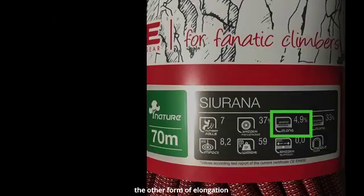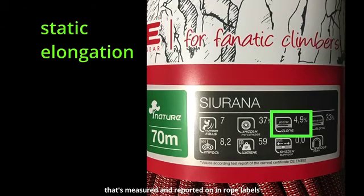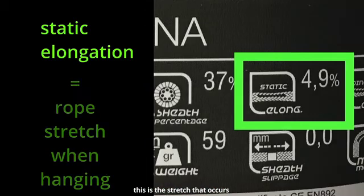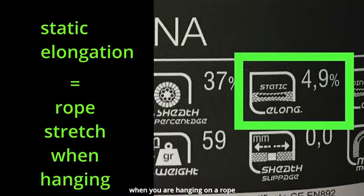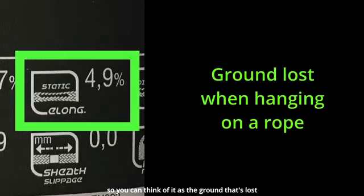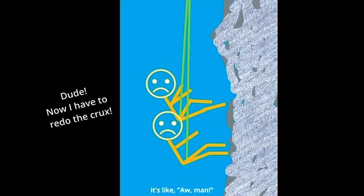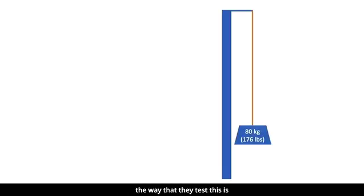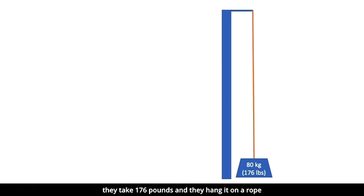The other form of elongation that's measured and reported on in rope labels is static elongation. This is the stretch that occurs when you're hanging on a rope. So you can think of it as the ground that's lost when you're top roping and you take a rest. The way that they test this is they take 176 pounds and they hang it on a rope and see how much it stretches.